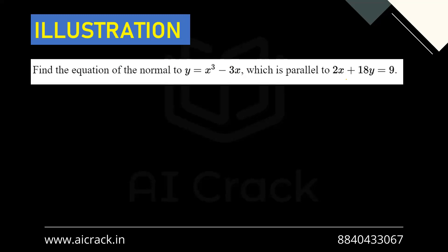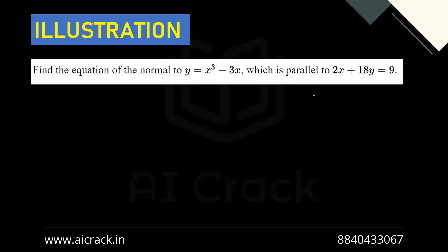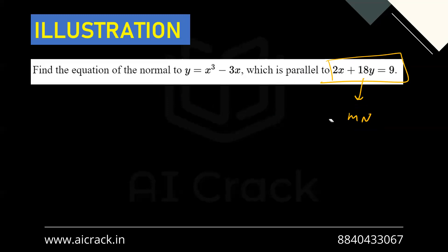Next example: find the equation of the normal to y = x³ - 3x which is parallel to 2x + 18y = 9. Here we don't have a point. Instead, the given line provides m_n because the normal is parallel to that line. We can find m_n from the line and use it to find the unknown point.